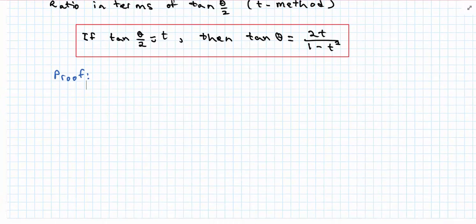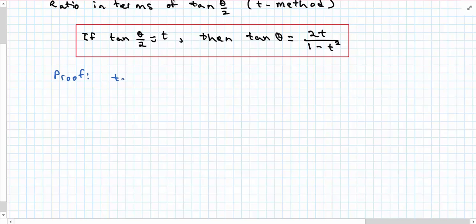What we've already shown is that tan(2x) is equal to 2tan(x) all over 1 minus tan squared x.